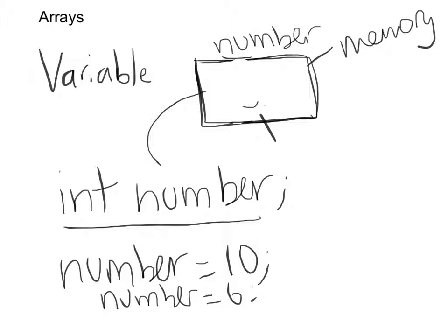What if I wanted a set of values — like 10, 6, 7, 8? You can't do that with a variable. Some of you might say you could use a string, but then you wouldn't be able to refer to each number separately without extra parsing. So we do this with arrays.